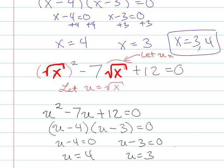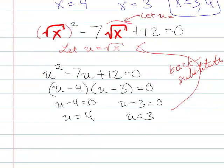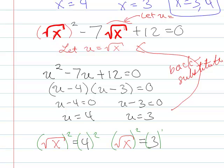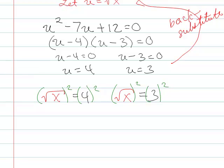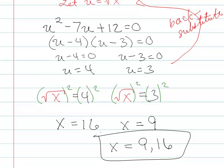Now I'm going to back substitute. And I'm going to say square root of x instead of u is equal to 4, and the square root of x instead of u is equal to 3. Okay, so now I can get rid of the square roots by squaring both sides. So I've got x square, square root of x squared is x, 4 squared is 16, and then x is equal to 9. So those are actually my solutions for that problem.